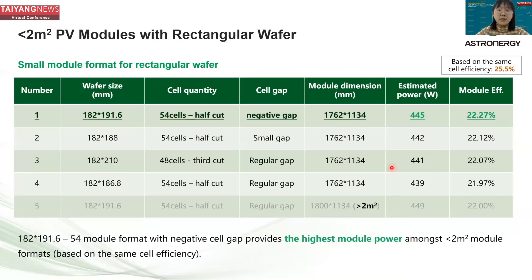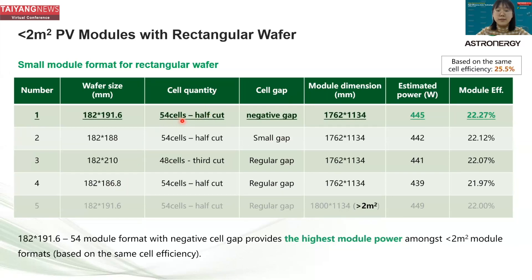For residential applications, we expect modules to be smaller in dimension for easy installation. The rectangular wafer provides several options for residential module design. Wafer sizes include 191.6 rectangular, 188 rectangular, 210 rectangular, and 186.8 rectangular, with different cell quantities and cutting methods — 54 cell half cut and 48 cell third cut — and different cell gap designs. All module dimensions are the same at 1762×1134, which is smaller than 2 square meters.